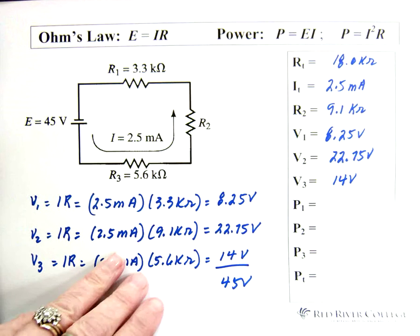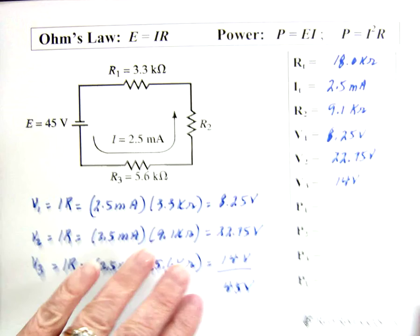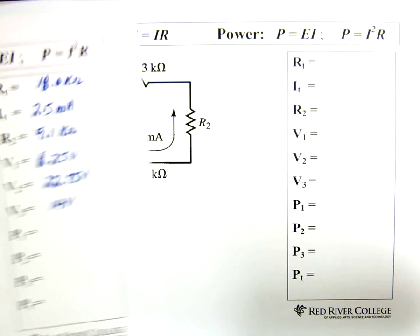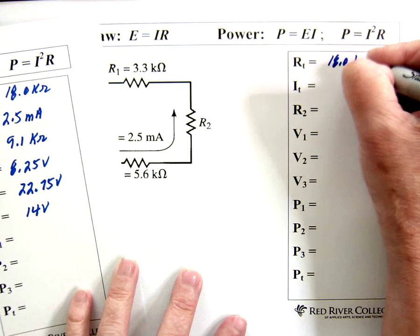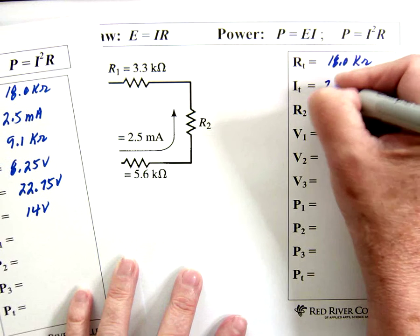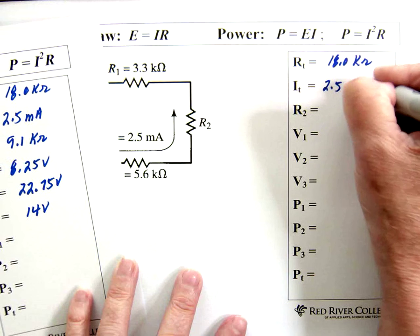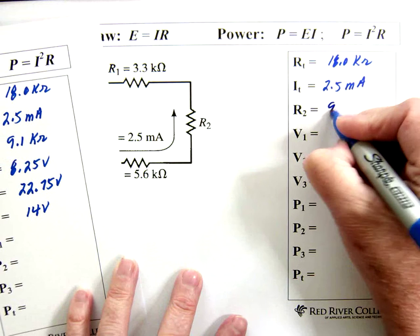Now, last page, let's solve for power. Again, I'm just going to transfer this information. 18.0 kilohms. 2.5 milliamps. 9.1 kilohm.